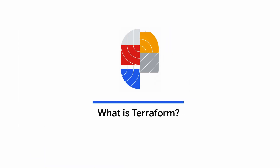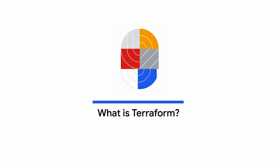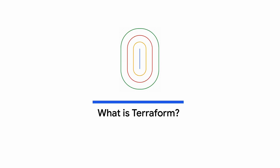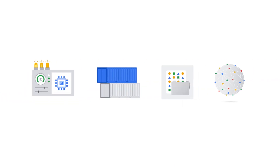If IAC can help with all of these pain points, what's Terraform all about? IAC is a concept, whereas Terraform is an IAC tool. By definition, Terraform is an open source infrastructure as code tool created by HashiCorp that lets you provision Google Cloud resources with declarative configuration files. Examples of resources include virtual machines, containers, storage, network, and a lot more.